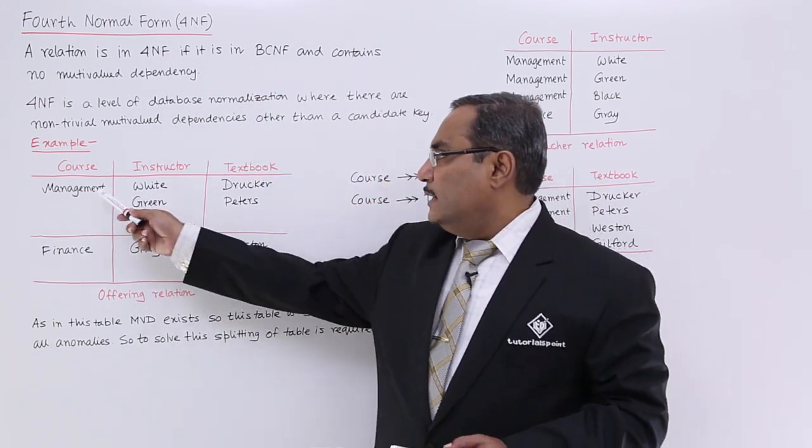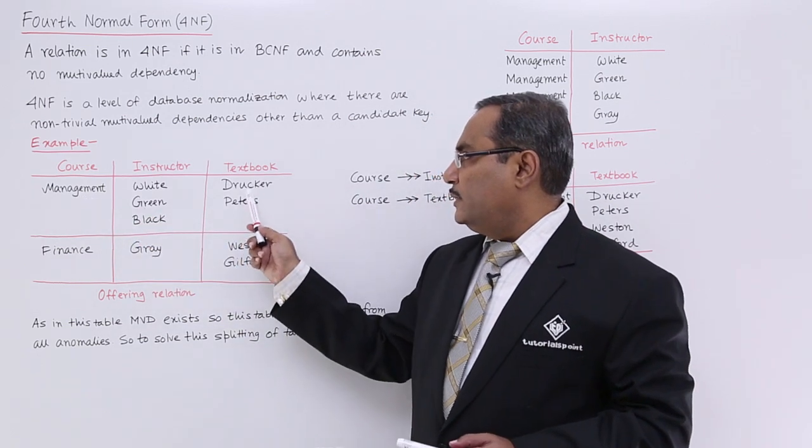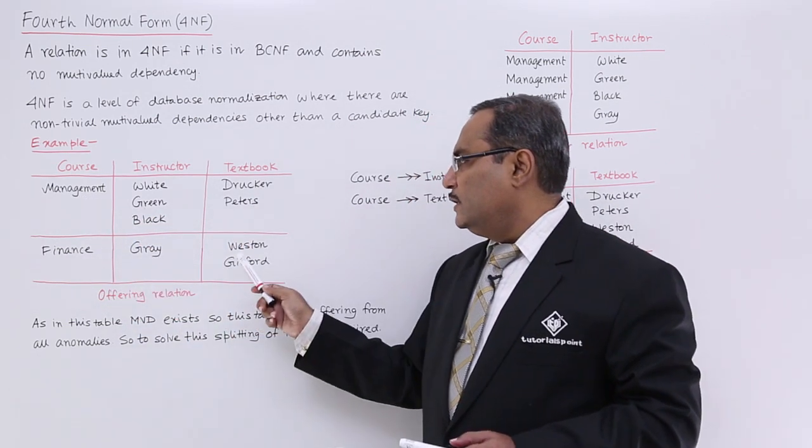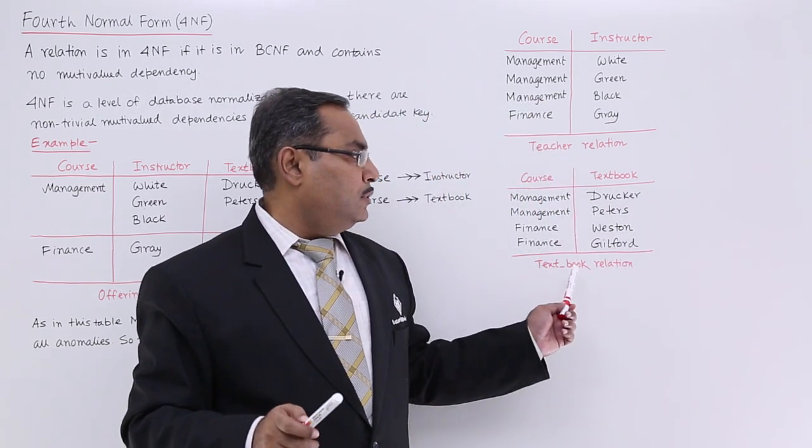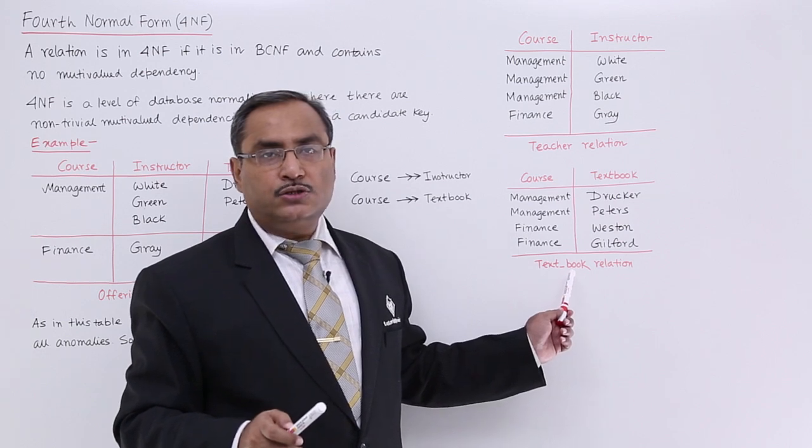And here in this case, this management will be written twice for textbooks and this finance will be written twice for these two textbook names. That is why here we will be having four tuples in the text underscore book relation.